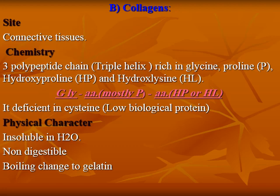The second type of scleroprotein is collagen, present in connective tissue. It consists of three polypeptide chains forming a triple helix. It is rich in glycine, proline, hydroxyproline, and hydroxylysine. The triple sequence starts with glycine, followed by proline, then hydroxyproline or hydroxylysine. Collagen is deficient in cysteine, making it a low biological value protein. It is insoluble in water, not digestible, and upon boiling converts to gelatin.